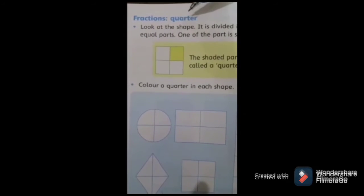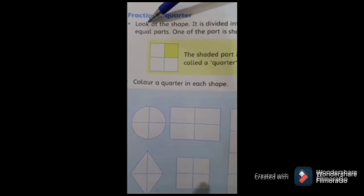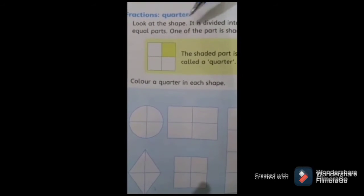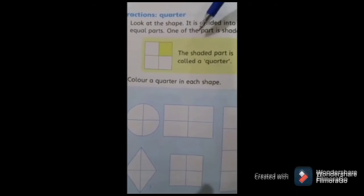Quarter means fourth part. Kisi bhi cheez ka chotha hissa kya kehlata hai? Quarter. Look at the shape, it is divided into four equal parts. One of the part is shaded. Kya hai? Yeh kitni shape di gayi hai?